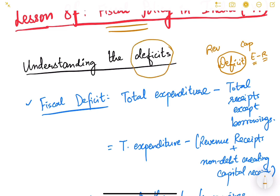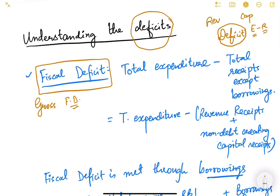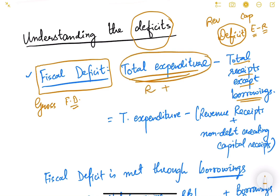First, let us study about fiscal deficit, also known as gross fiscal deficit. It is the total expenditure of the government minus total receipts of the government except borrowings. Total expenditure includes revenue expenditure and capital expenditure. Whatever borrowing the government is doing — whether external borrowing or internal borrowing — is excluded from total receipts.